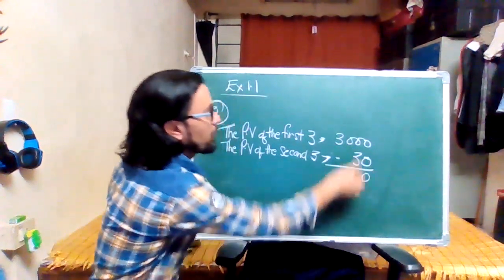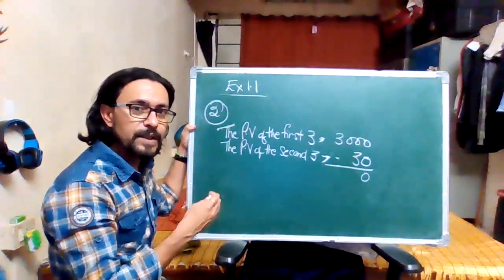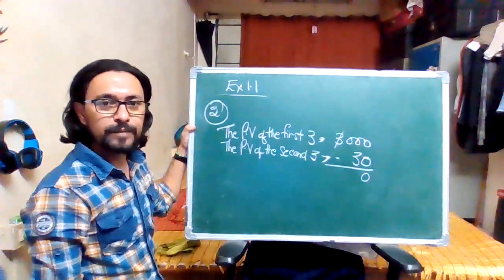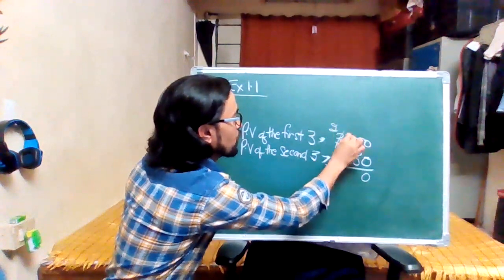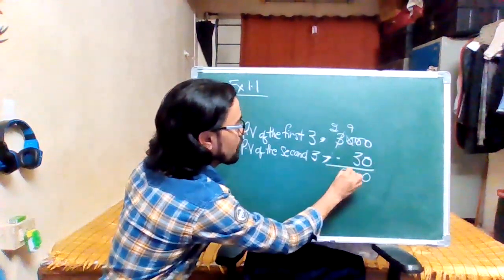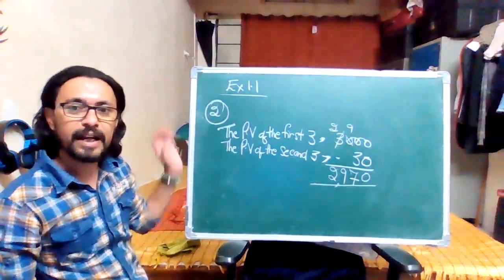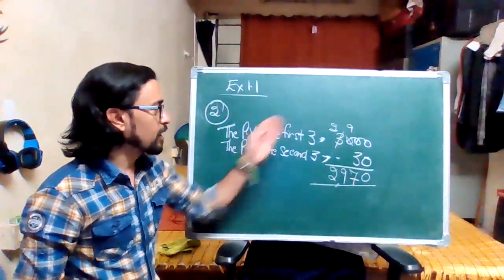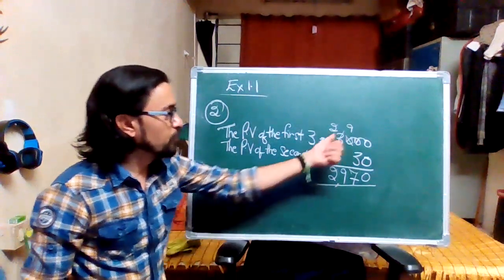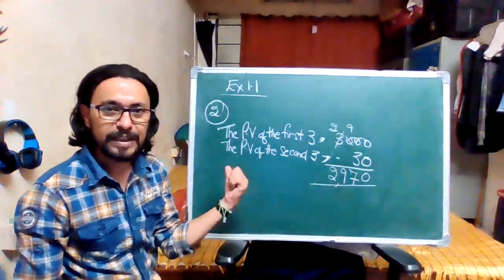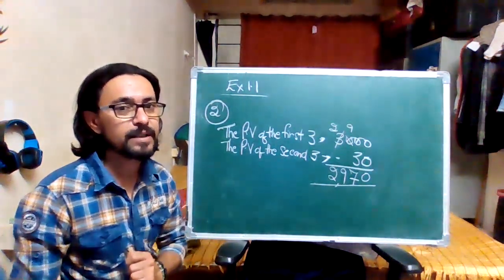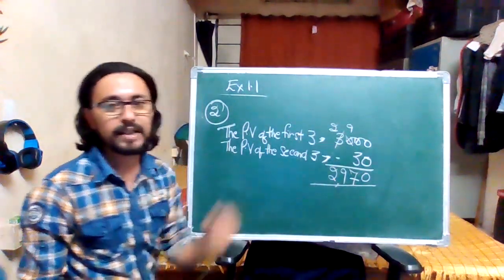0 take away 0 gives me 0. When I come to the next column I need to borrow, but the previous digit happens to be 0, so I go to the digit before that, which is 3. I borrow 1 from there — 3 becomes 2, this becomes 10. Borrow 1: this 10 becomes 9, and this becomes 10. From 10, take away 3 is 7. 9 comes down, 2 comes down. So my answer is 2,970. You find the place value of each occurrence of the digit, put them one under the other, and subtract — because the term used in the sum is 'difference', which means subtraction.